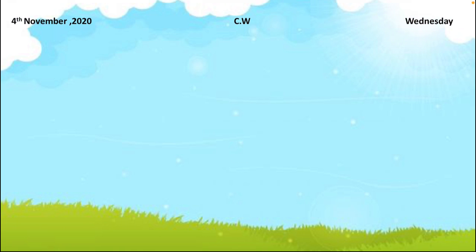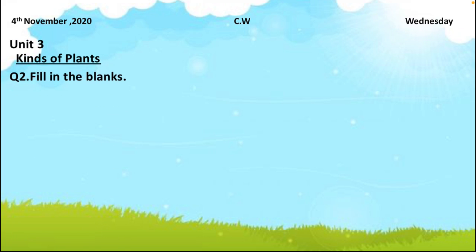Write down today's date: 4th November 2020, classwork. The day is Wednesday. Draw the margin line. Write down unit number three: kinds of plants. Underline the topic — question two, fill in the blanks. It is our daily practice to write down the classwork and date at the top of the page, then write the unit and underline the topic.